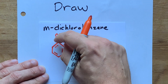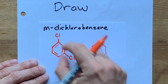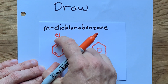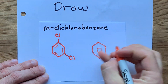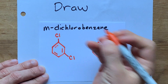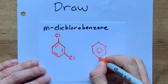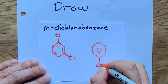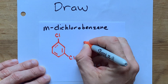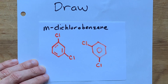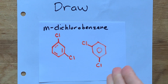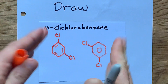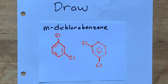The fact that they're not beside each other or across from each other is what makes them meta here. Now, it doesn't matter which two you pick. I could have picked the bottom one here and then gone two to the side here. These are the exact same molecule, just written two different ways. Both of them are meta-dichlorobenzene.